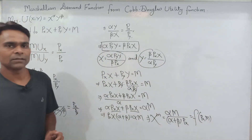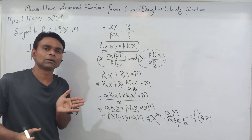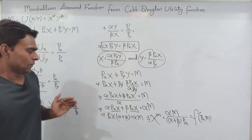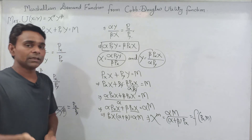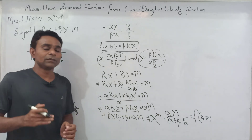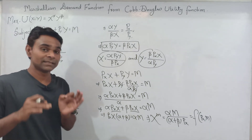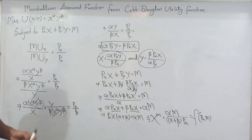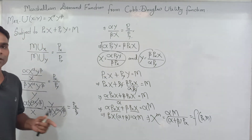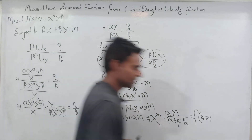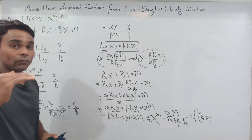The Marshallian demand function is also known as the ordinary demand function, the Walrasian demand function, and the uncompensated demand function.